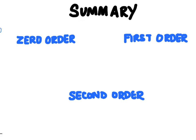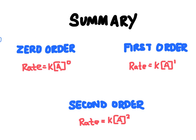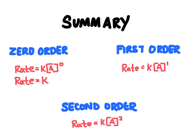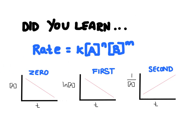Let's summarize. In a zero order reaction, the concentration does not affect the rate, and rate = k. In a first order reaction, the concentration affects the rate and we have concentration raised to the first power. In a second order reaction, the concentration affects the rate and we have concentration raised to the second power. You learned how to write a rate law, the different orders of reaction, and how to identify them graphically: a straight line of concentration vs. time indicates zero order; a straight line of ln(concentration) vs. time indicates first order; and a straight line of 1/[concentration] vs. time indicates second order.